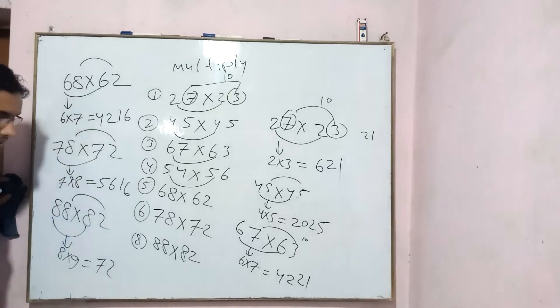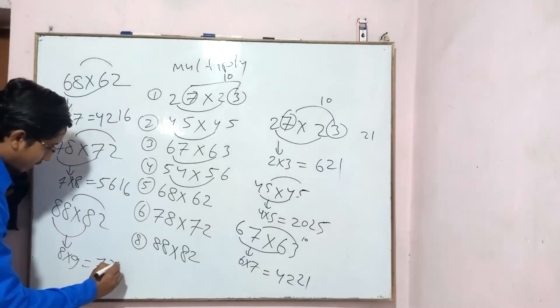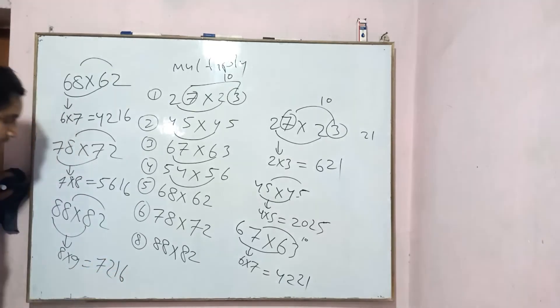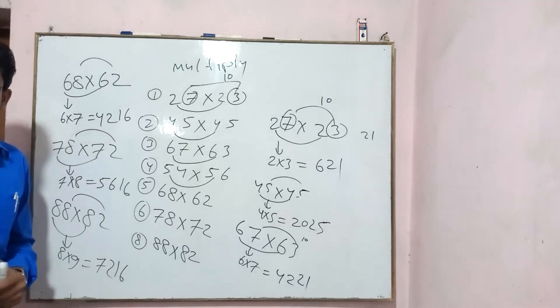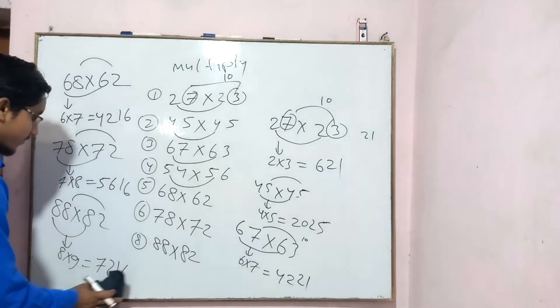When you multiply this, how much comes here? 16 comes here. How much came? 16 came. So this is how you can solve it here. This is a very easy method.